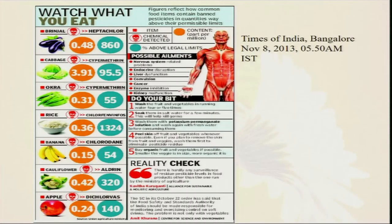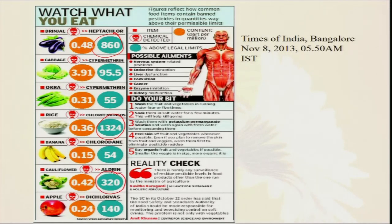If we see the different types of food we are taking, sometimes they are loaded with pesticide residue, and sometime their limit is more than whatever the safe limit. In the case of brinjal, heptachlor residue is 860 percent more than the safe limit. Similarly, in rice, there is some pesticide at 1324 percent. In cauliflower, aldrin residue is more than 320 percent. Whenever we are consuming this pesticide-loaded food there will be a problem with our health, so quality of food is very much important.